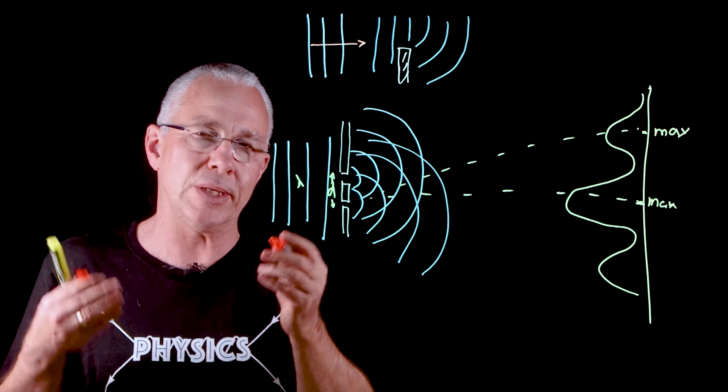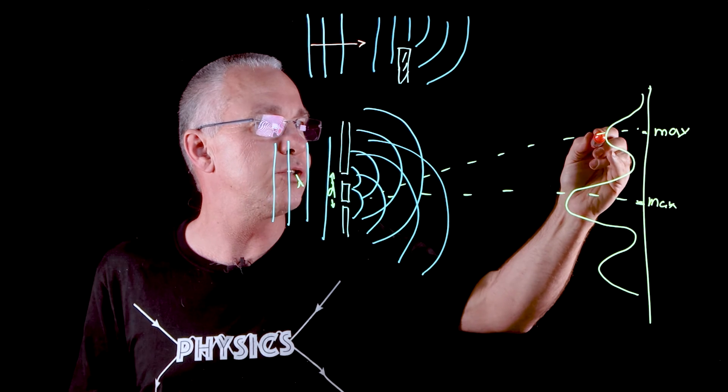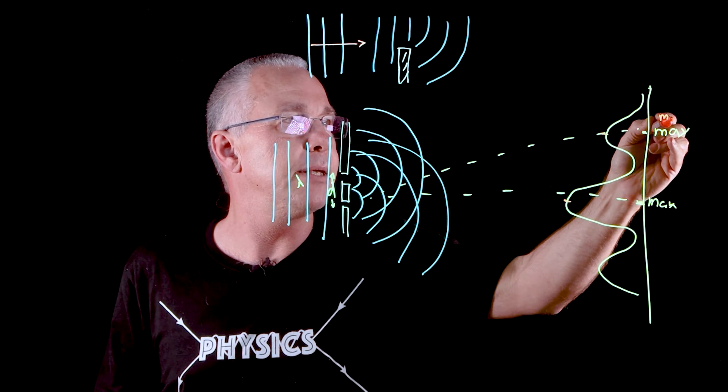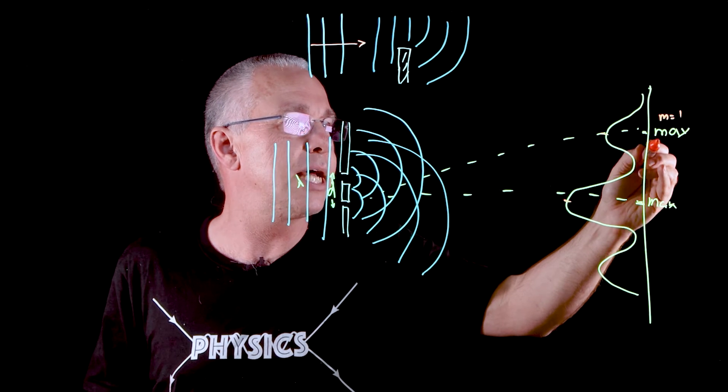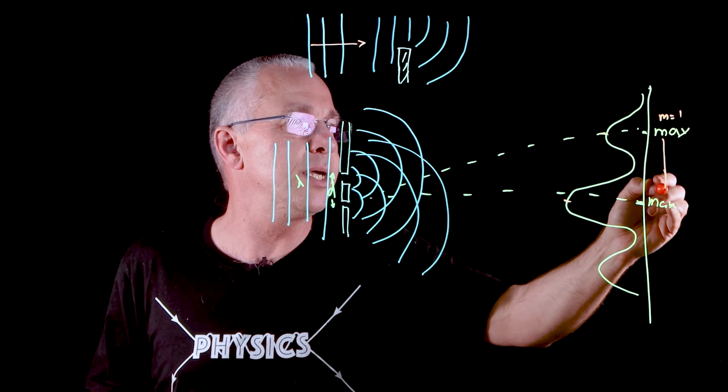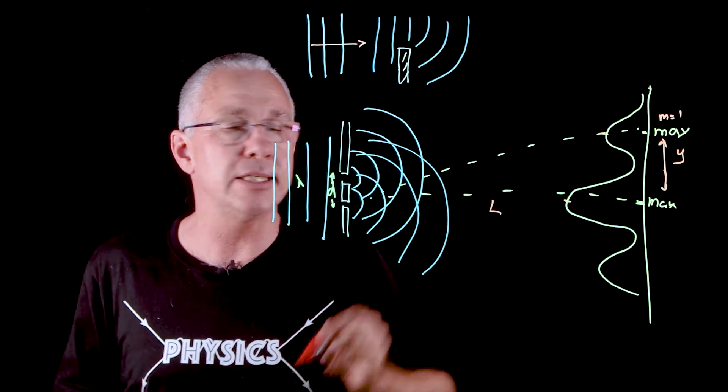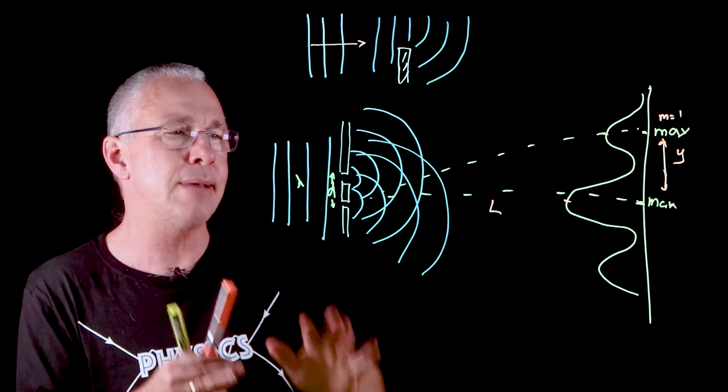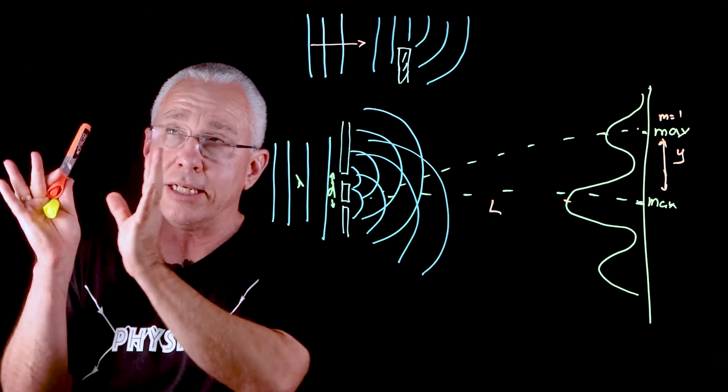Now, why am I drawing this as well? Now all of a sudden we have a whole series of measurements that we can add to it. First, I have a distance here between these two peaks, and in this case is a maximum of m equal one because it's the first one where we have one wavelength difference. We have a distance here between these two peaks of y. The screen in this case has a distance of l, how far it is from the screen.